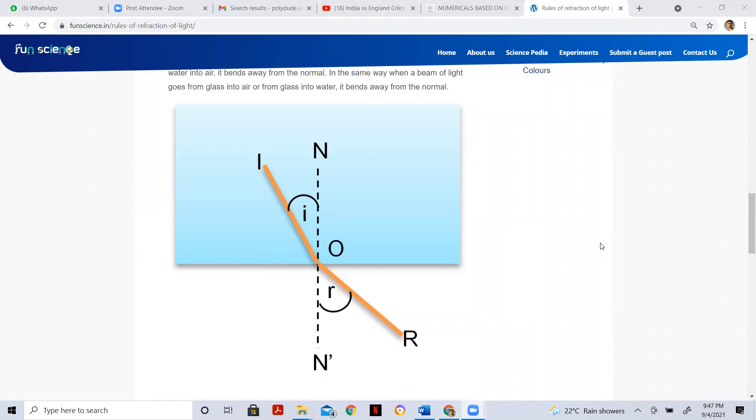Snell's law says that sin i by sin r is equal to n2 by n1.